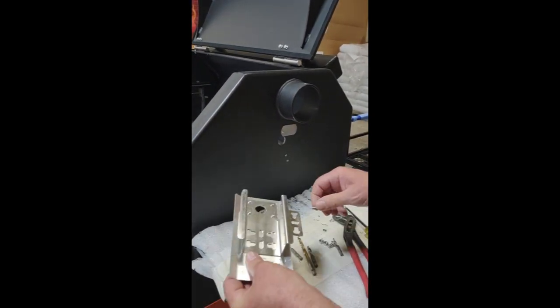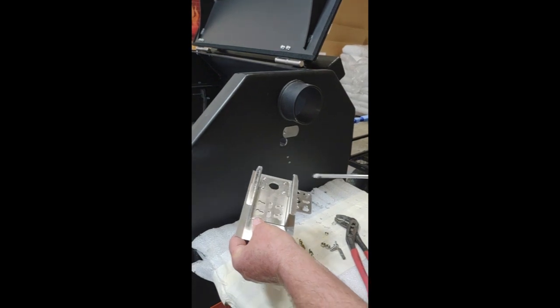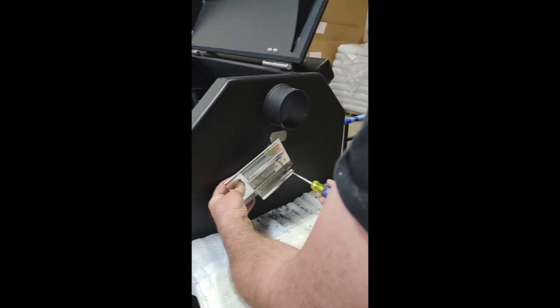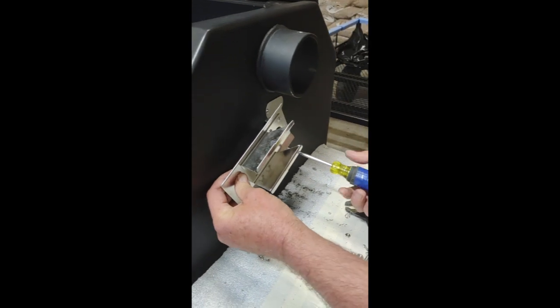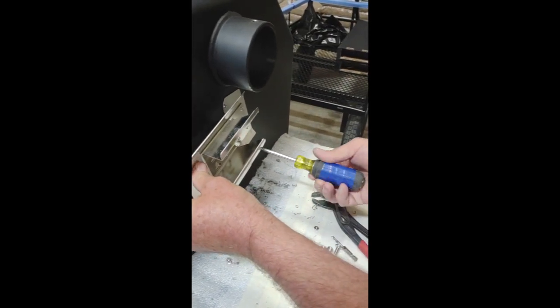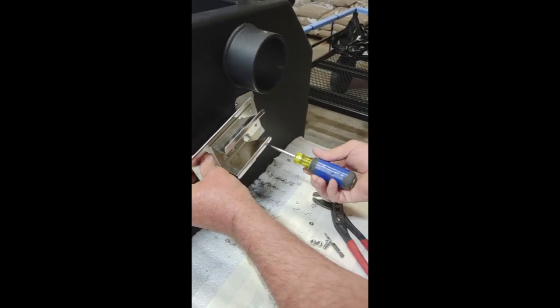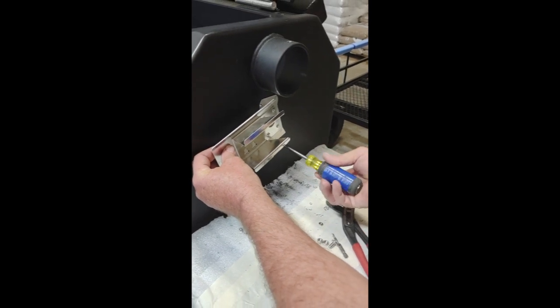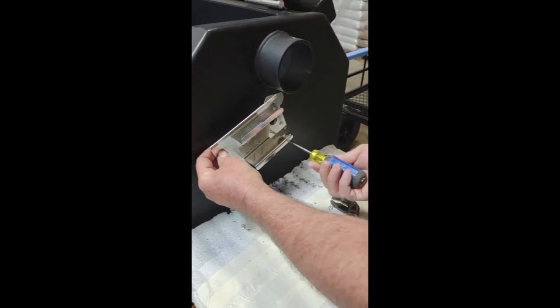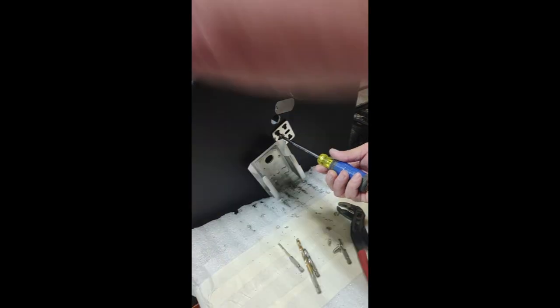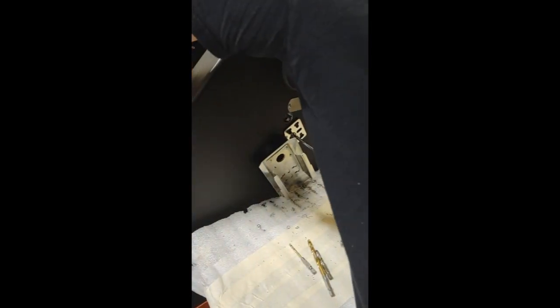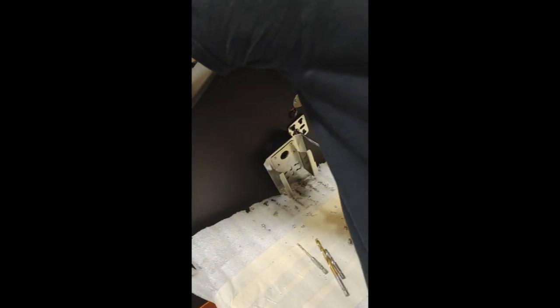Now we're going to take and mount the rotisserie motor bracket. And it goes at an angle, and people wonder why that is. Well, that's the way the manufacturer designed it so that when people have it outside, that the rain doesn't go down the vents.